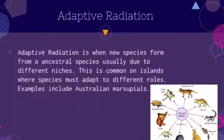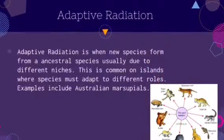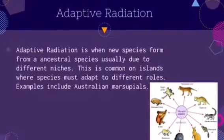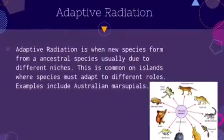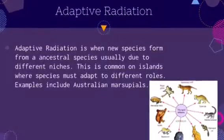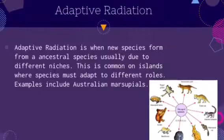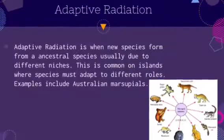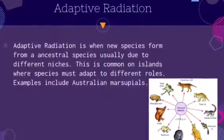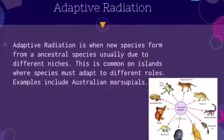Adaptive radiation is when new species form from an ancestral species, usually due to different niches. This is common on islands where species must adapt to different roles. Examples include the Australian marsupials.